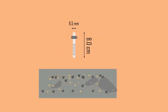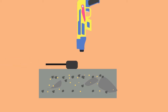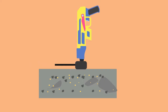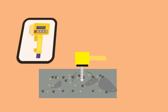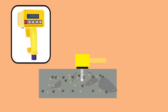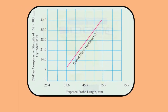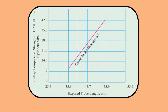A probe of diameter 6.5 mm and length 8 cm is used for testing. The gun is placed on the required location and the probe is forced onto the concrete sample. The depth of penetration of the probe provides an indication of the compressive strength of the concrete, and is generally correlated with it.